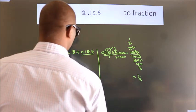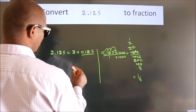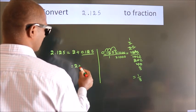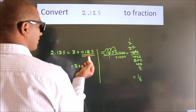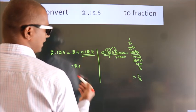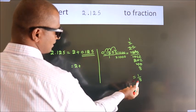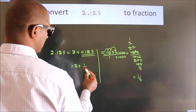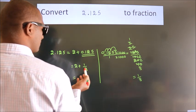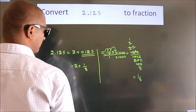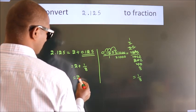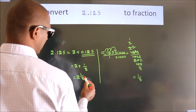Now here 2 plus, in place of 0.125, now we write this fraction 1 by 8. 2 plus 1 by 8. In mixed fraction it is 2 and 1 over 8.